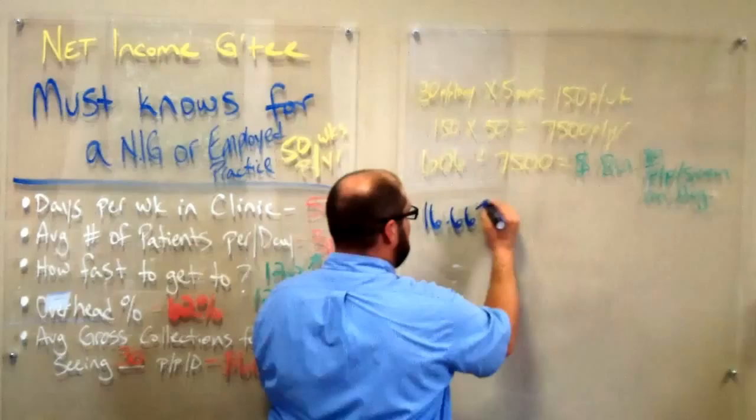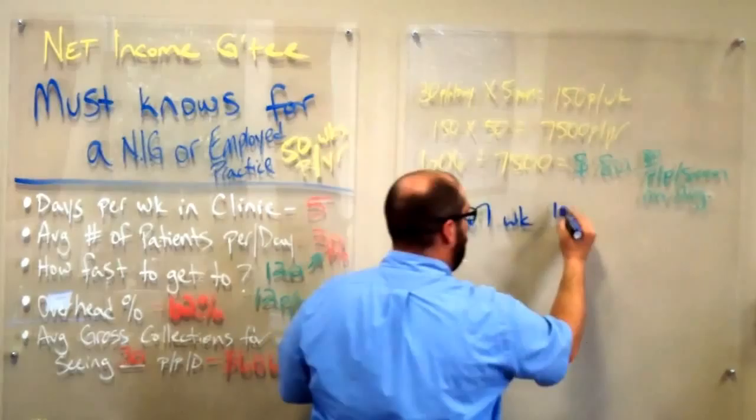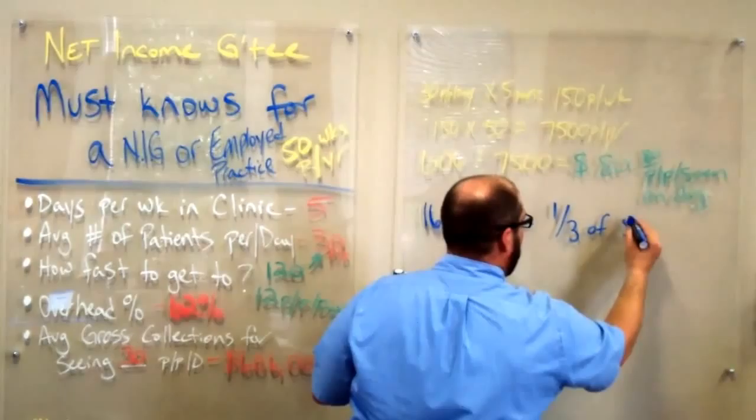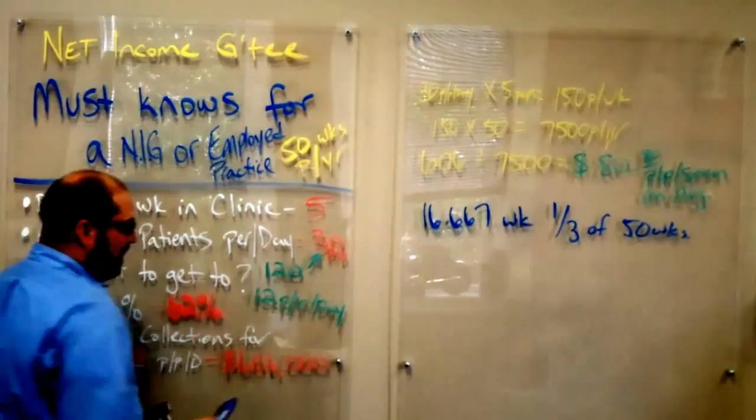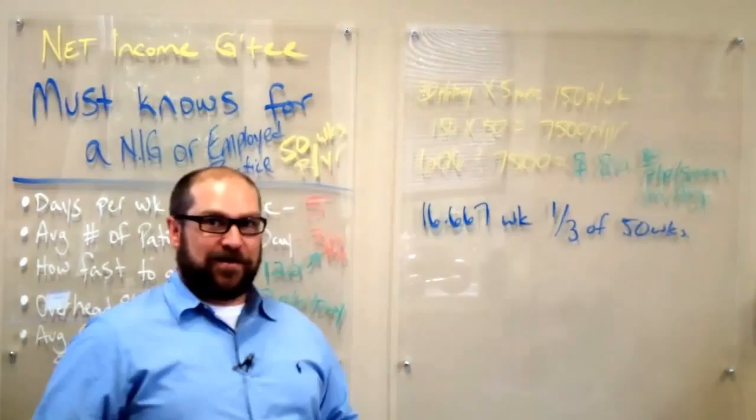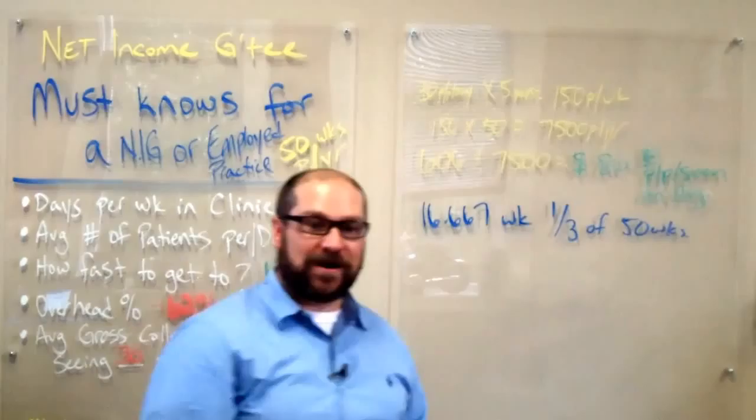Now, knowing that 120 days is one-third of a year, I'm going to write this up in blue. We're going to say that that's 16.667 weeks of the year, which is one-third of 50 weeks, because that's all we're working.